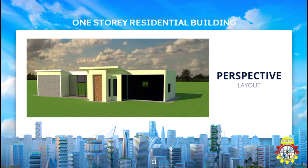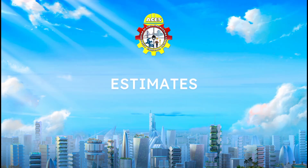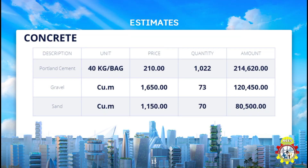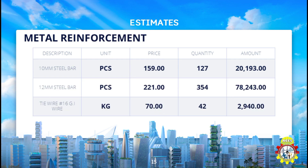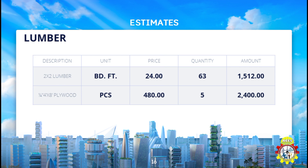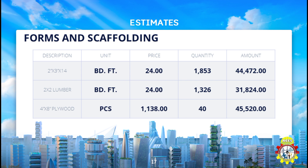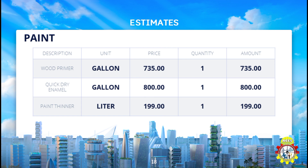Nine is our perspective drawing, which was made with SketchUp. Here are our estimates: concrete estimates, followed by masonry estimates, metal reinforcement estimates, lumber estimates, forms and scaffolding estimates, and paint estimates.